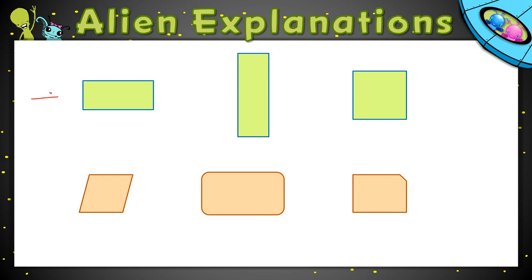This top row has samples of rectangles. They have four sides and four square corners. This last one is actually a square. Squares are rectangles too. They have the four sides and these four square corners.